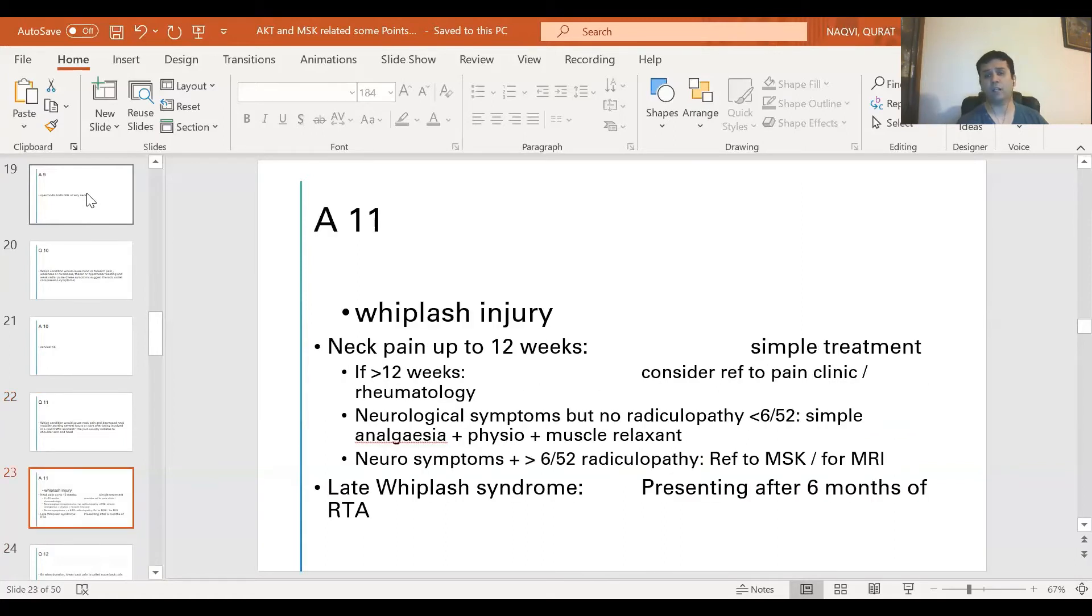For whiplash injury, there's some extra information. Essentially, neck pain up to 12 weeks you treat with simple analgesia, but if it's more than 12 weeks then you need to refer to pain clinic or rheumatology. If there are no neurological symptoms but no radiculopathy less than 6 weeks, they require simple analgesia with physio and muscle relaxant. But if there are neurological symptoms and more than 6 weeks of radiculopathy, we should refer to MSK or for MRI. There's something called late whiplash syndrome, where patient presents after 6 months of road traffic accident.